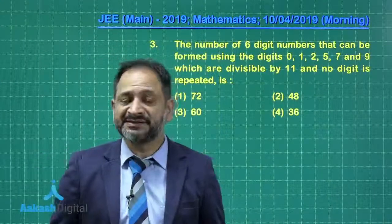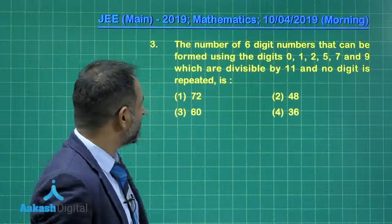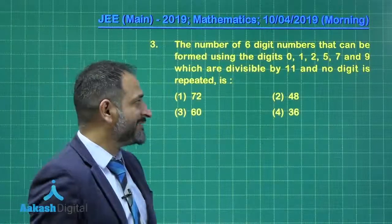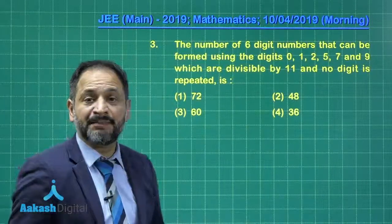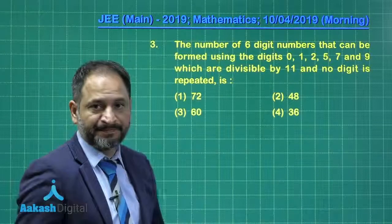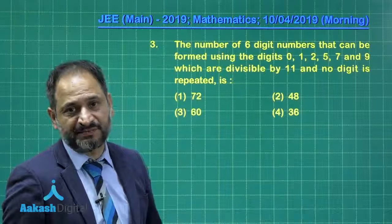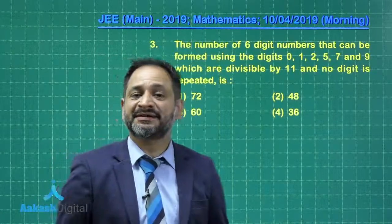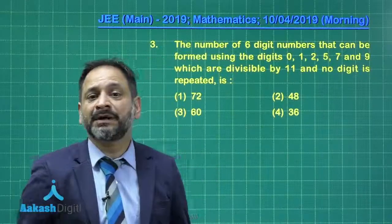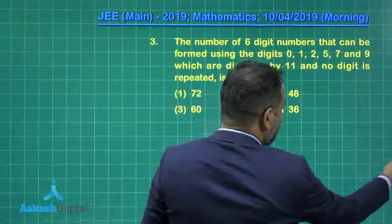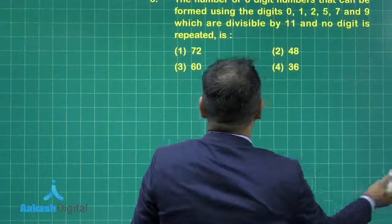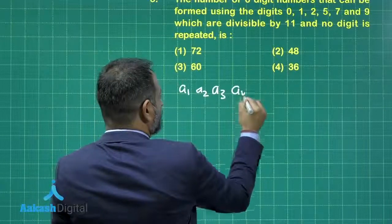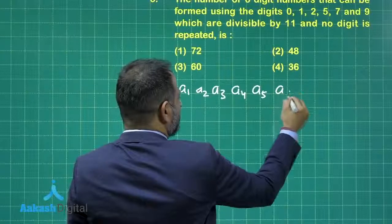The next question is interesting when it is based on permutation. The question reads as the number of 6 digit numbers that can be formed by using the digits 0, 1, 2, 5, 7 and 9 which are divisible by 11 and no digit is repeated. You know the concept of divisibility by 11: the sum of the digits at the odd place and the sum of digits at the even place, the difference between them has to be a multiple of 11. So here we have a 6 digit number, that is a1, a2, a3, a4, a5 and a6.